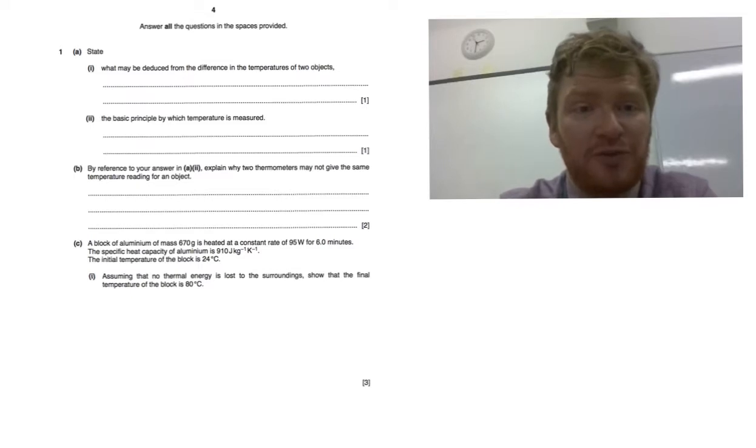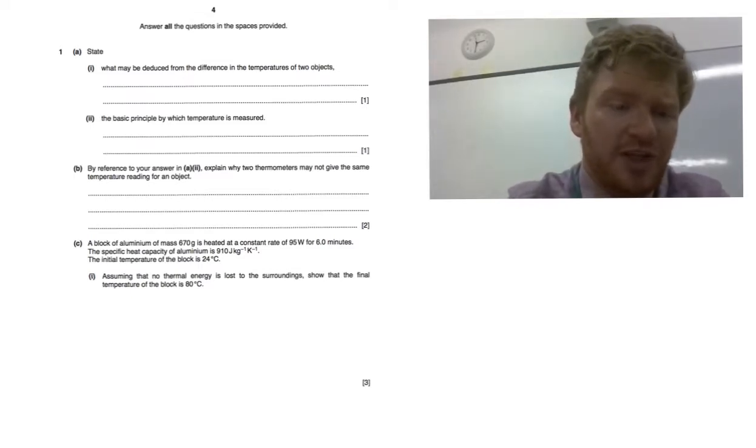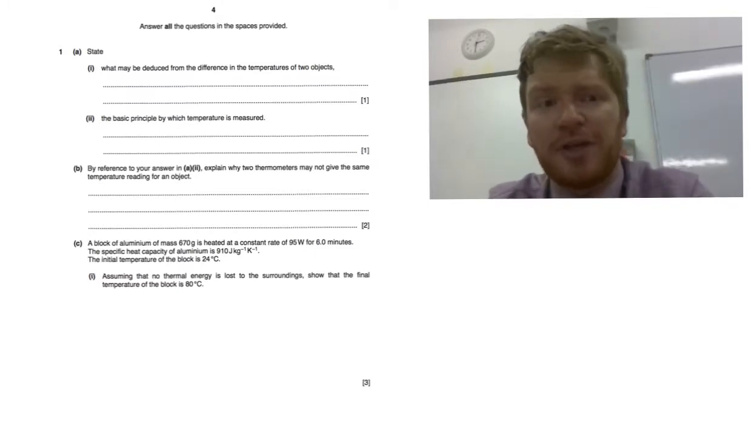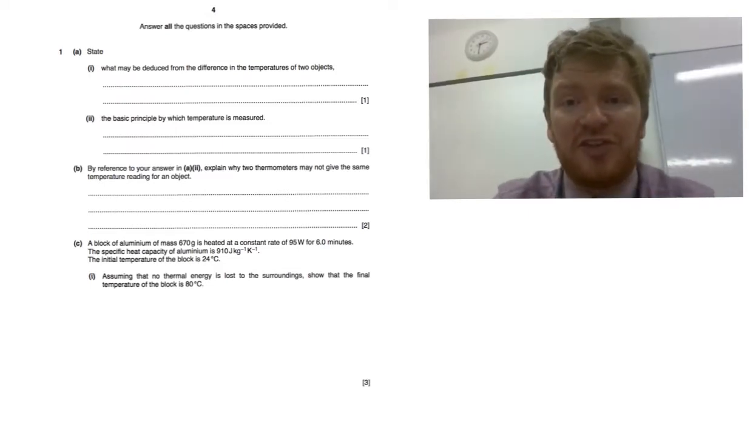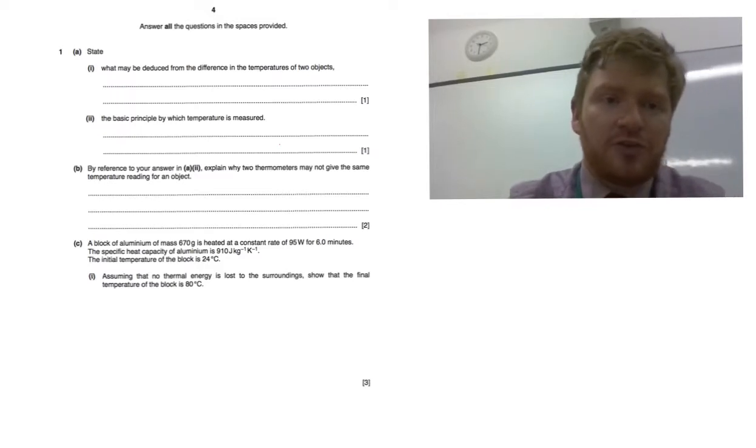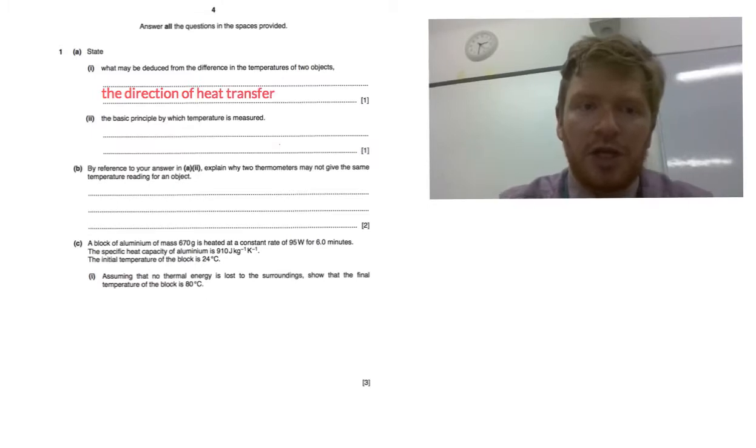What may be deduced from the difference in temperature between two objects? That's quite an odd-sounding question, until you think about, well, there's actually one thing that can be told: the direction of heat transfer. So obviously, as you know, it will always be from hotter to colder.